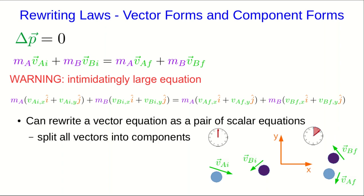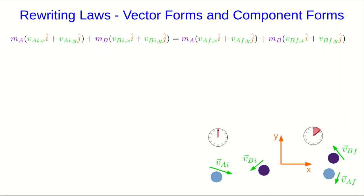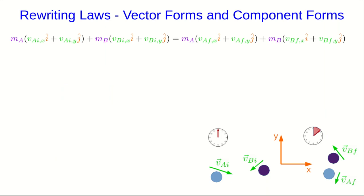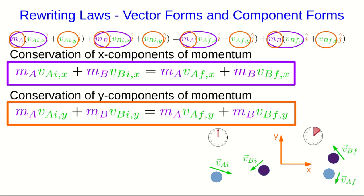But remember, we can take a vector equation and split it into a pair of scalar equations. We've seen that, for example, with the position as a function of time for constant velocity. So, we can do exactly the same thing with our conservation of momentum equation here. We can take all the x components and pull them out into their own equation. And we can take all the y components and pull them out into their own equation. And now we have two much more manageable equations, which we can solve much more easily and which aren't nearly so scary to look at.